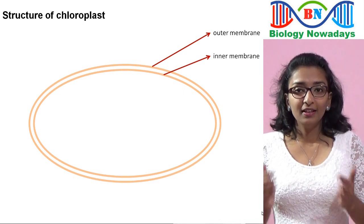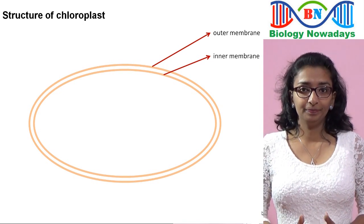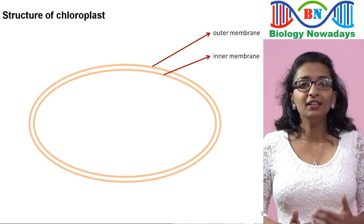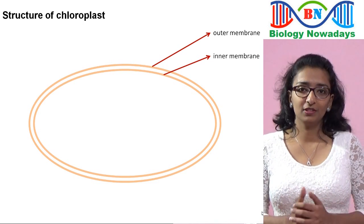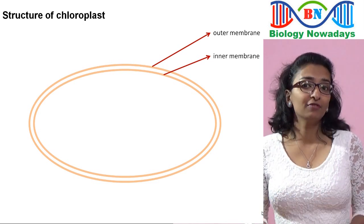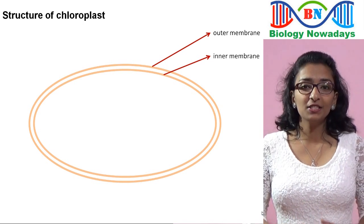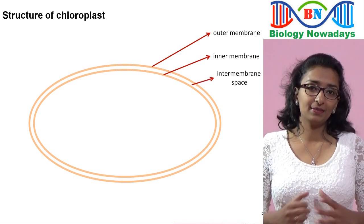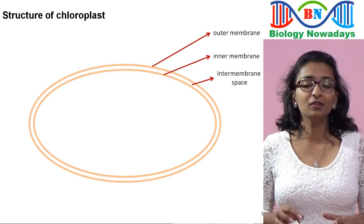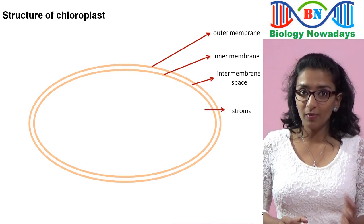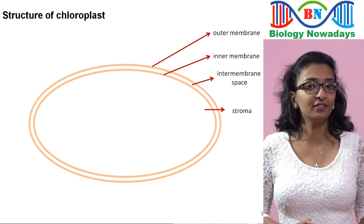In other words, the inner membrane is selectively permeable. The outer and inner membranes of the chloroplast don't contain chlorophyll. The two envelope membranes are separated by a gap called the intermembrane space. There is a colourless fluid within the chloroplast called stroma, which contains the enzymes responsible for carbohydrate synthesis.